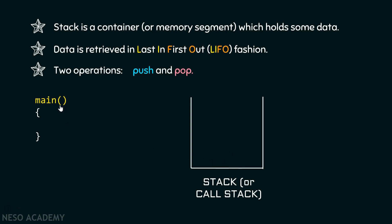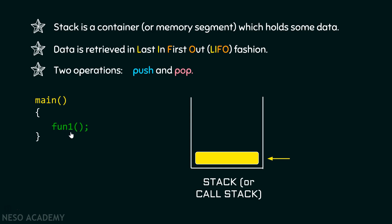As we call the main function, it will get stored inside the call stack. This pointer simply means that this function is now under execution — the compiler knows main is running. Suppose after executing some lines of code, the compiler encounters a call to a function fun1. The control transfers from main to fun1, and fun1 gets stored inside the call stack. Now the pointer is pointing to function1.